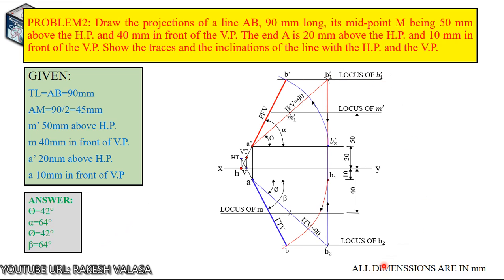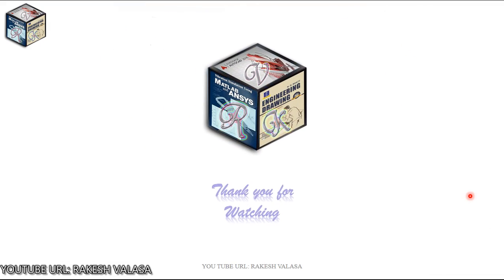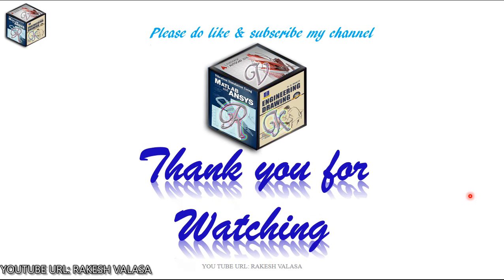This is the final solution for the given problem number 2 in engineering drawing by the NDBurt textbook. At the bottom of your drawing sheet, in the title block, you must write: all dimensions are in millimeters. I hope this is very clear to everyone. Thank you for watching. Please do like and subscribe to my channel for more updates.